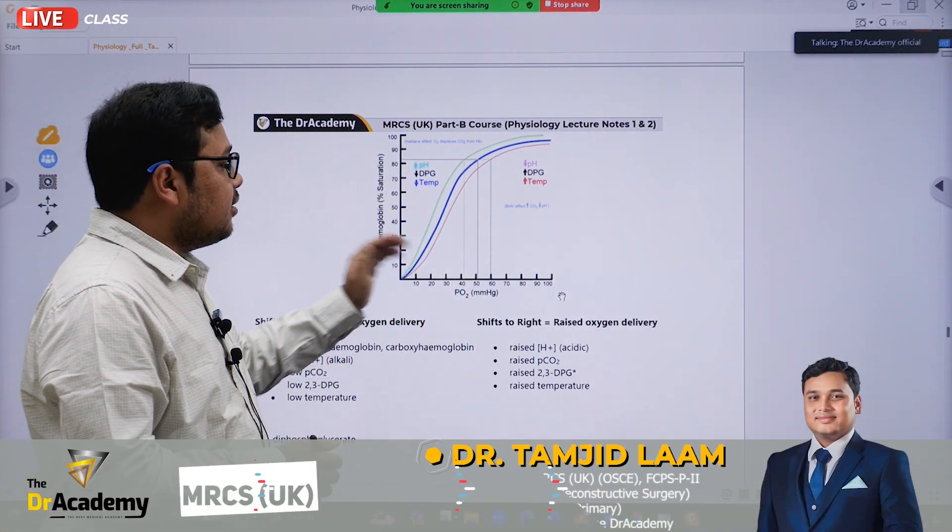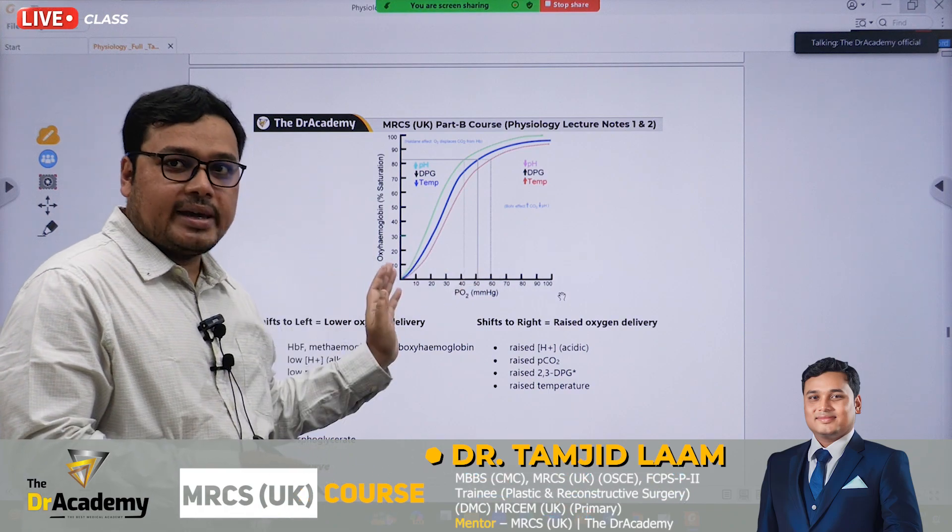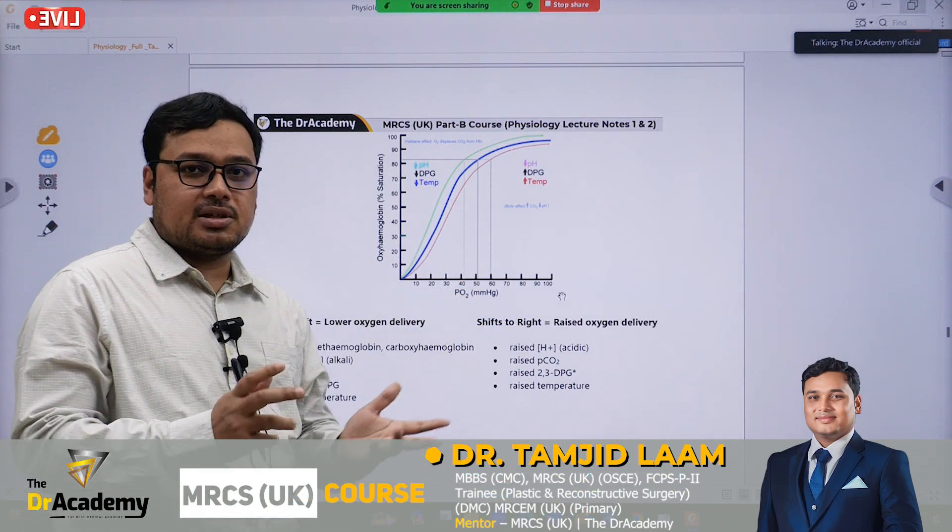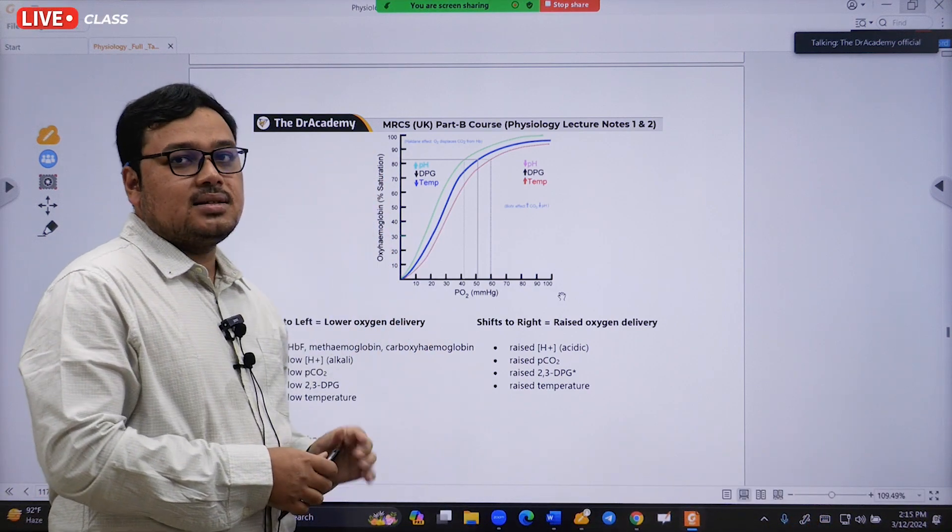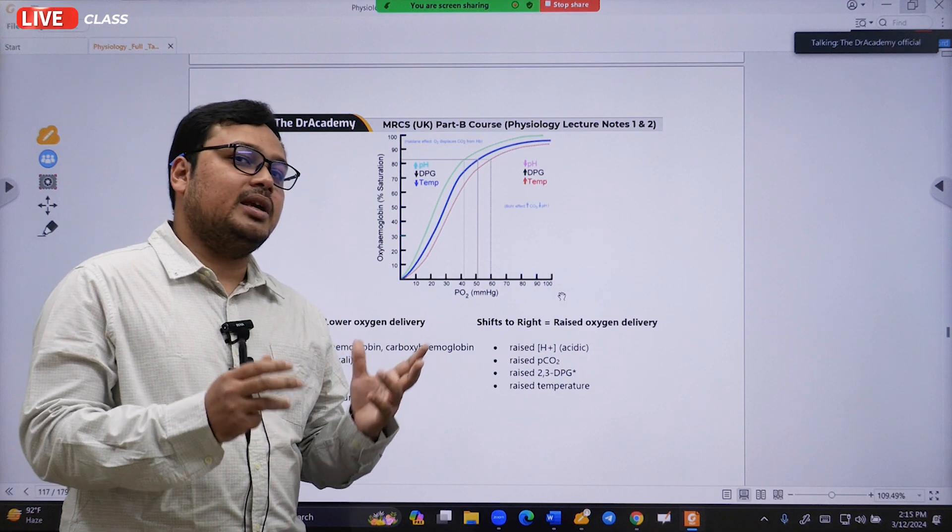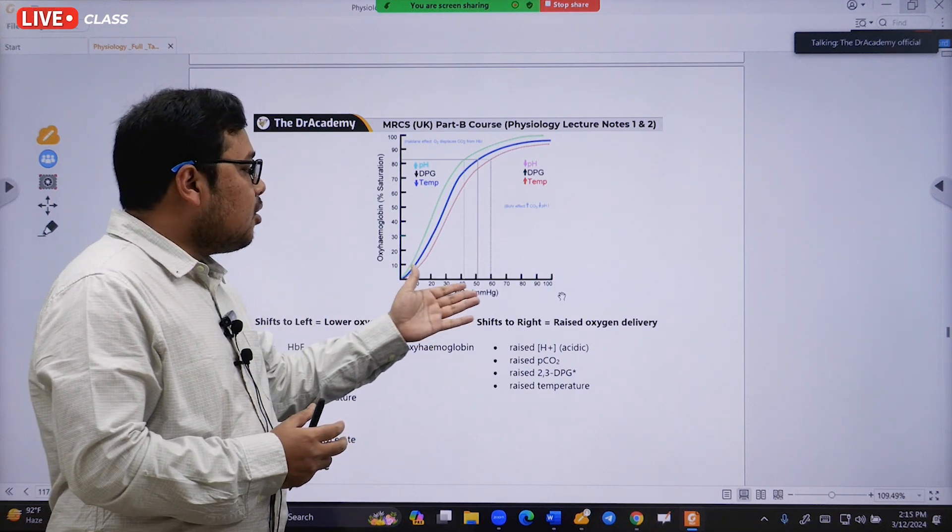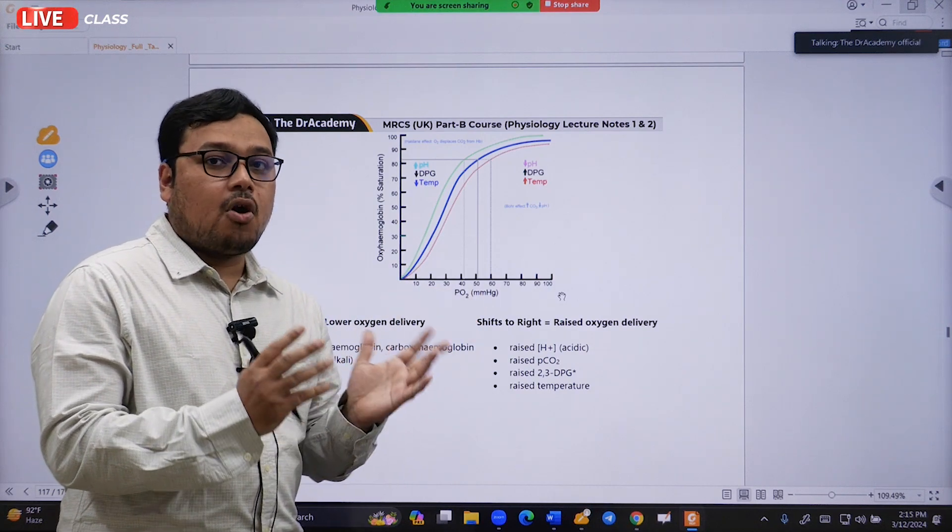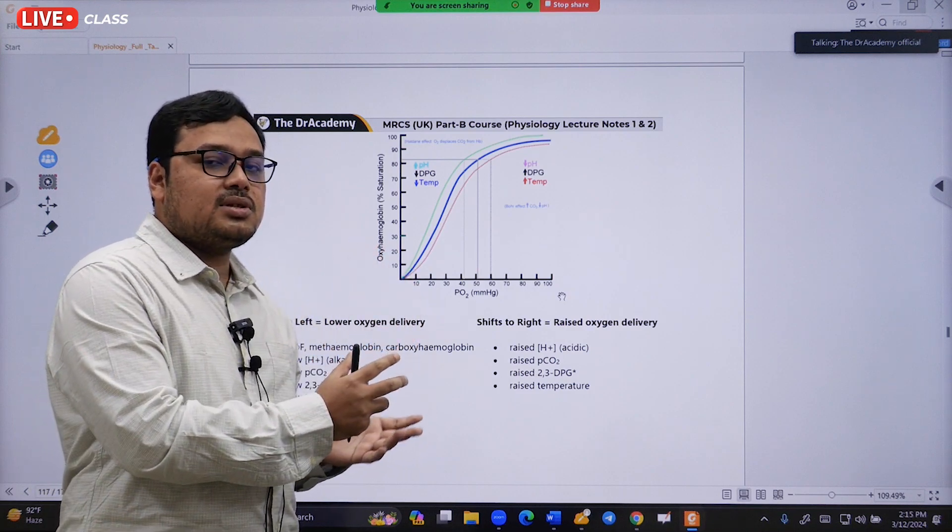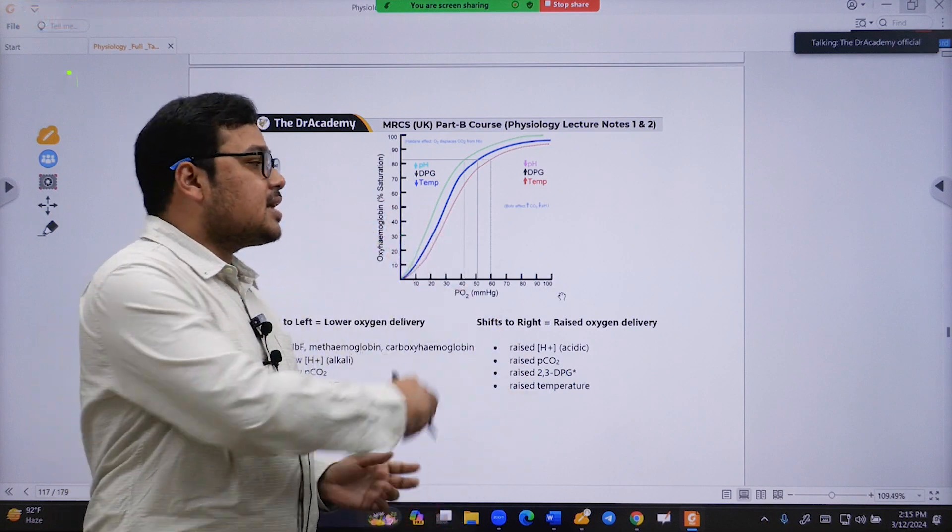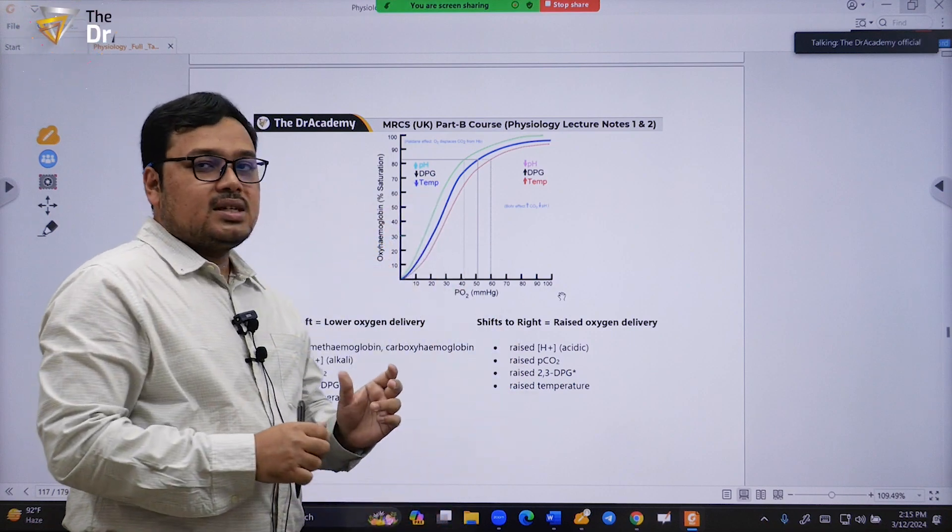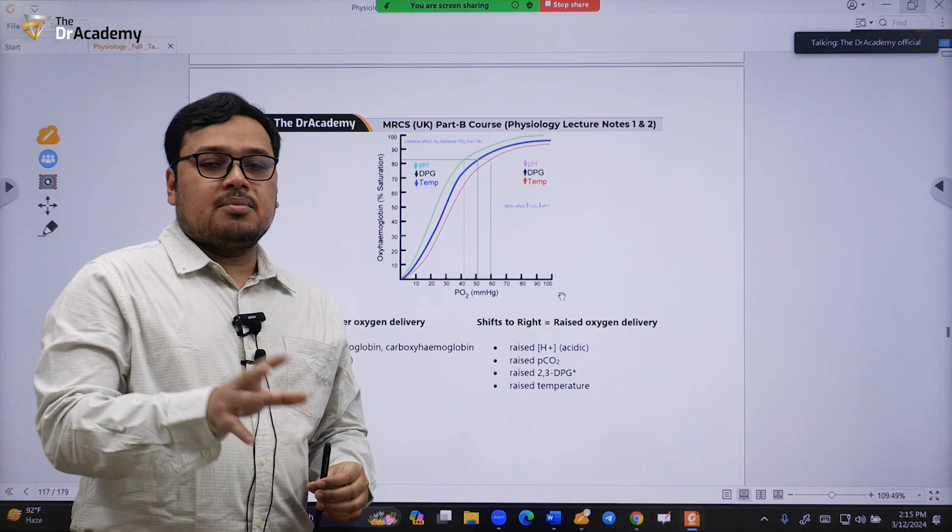We make a graph with x-axis and y-axis. Along the x-axis we plot the partial pressure of oxygen, and along the y-axis we measure the saturation of hemoglobin. Depending on the changes of partial pressure of oxygen, how the saturation of hemoglobin occurs - that curve we call the oxygen dissociation curve and it's kind of S-shaped.